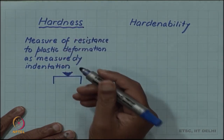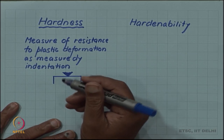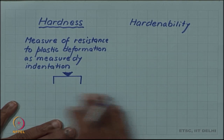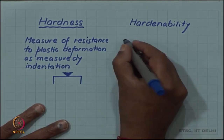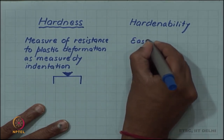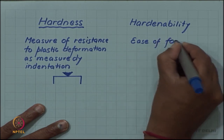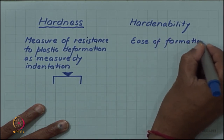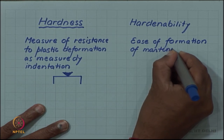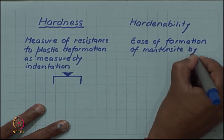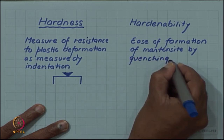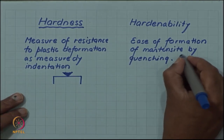For a higher hardness material, the indenter will go less into the material; for lesser hardness material it will penetrate more. Hardenability has nothing to do with this hardness — hardenability is ease of formation of martensite by quenching. So, the slower the quench rate, the higher is the hardenability.